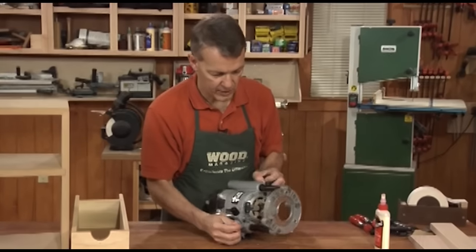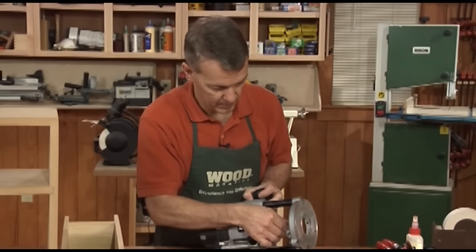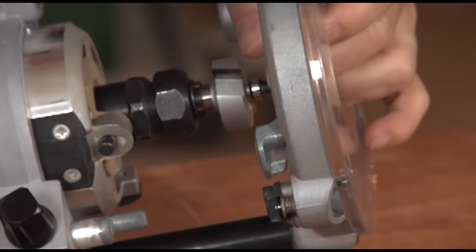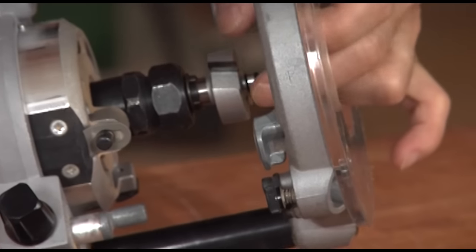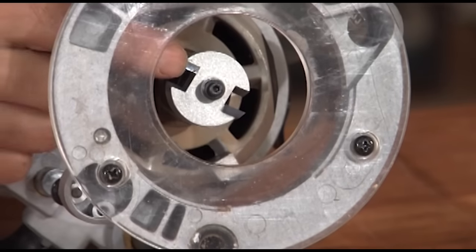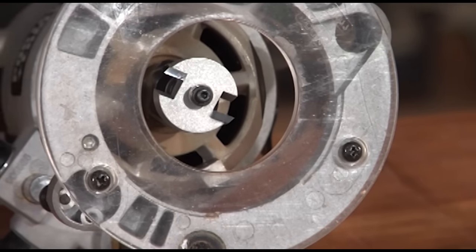This router, I've got a special bit, it's called a rabbeting bit. You can see it's got the cutter on it, and what's special about it is it's got this bearing down here. This bearing rides against the edge of the workpiece, and the diameter of the bearing and the cutting edge of the bit is the width of the rabbet.